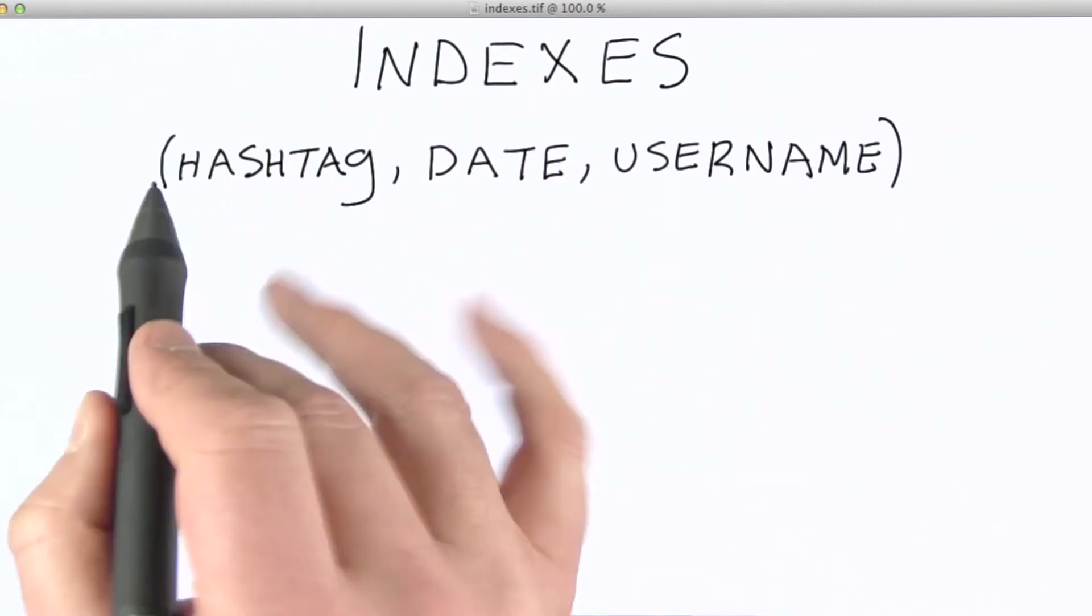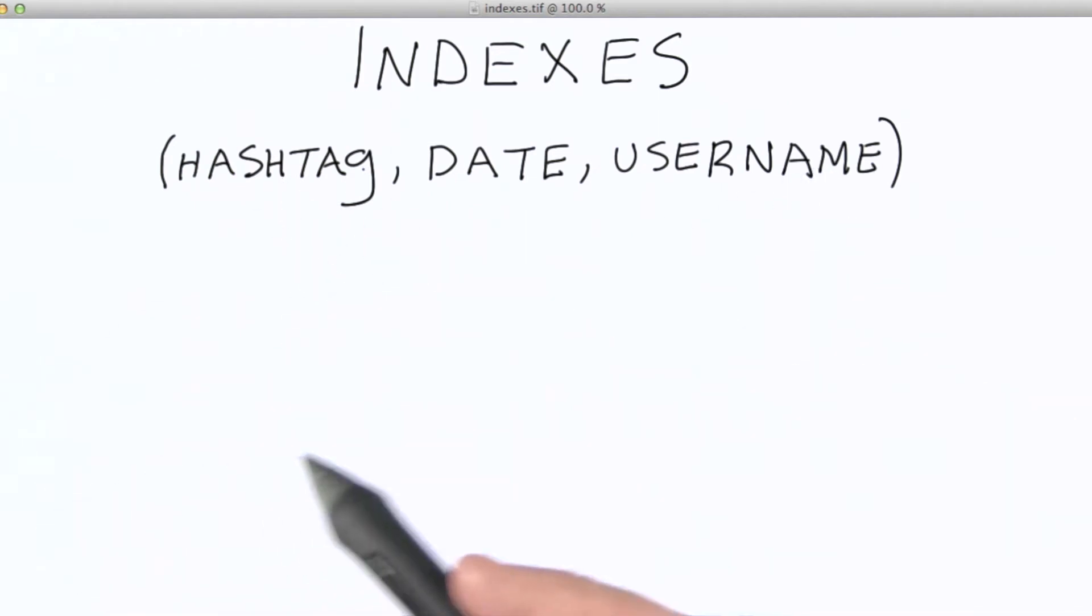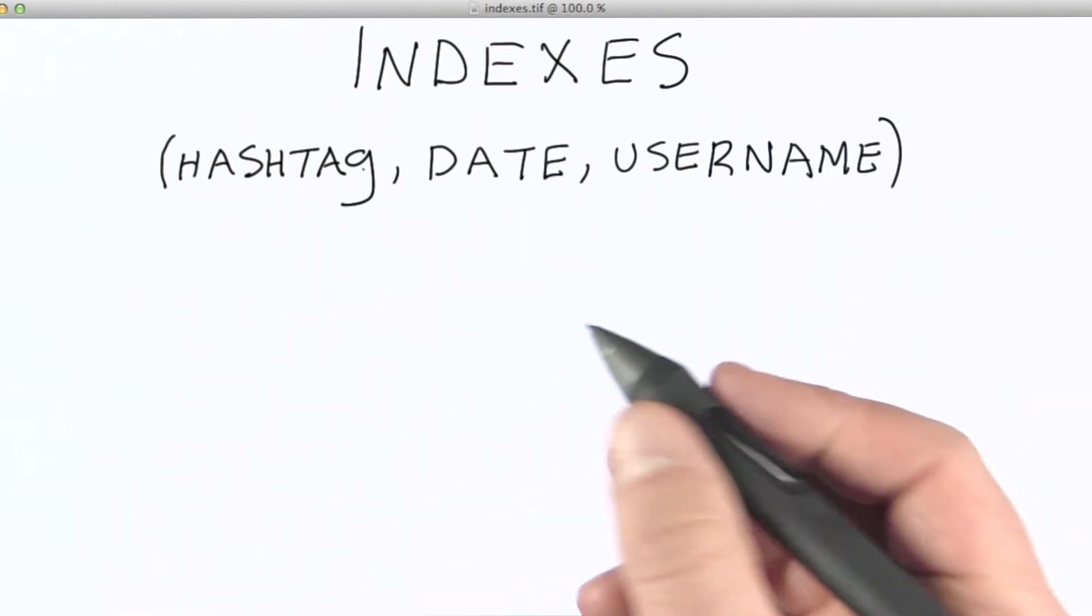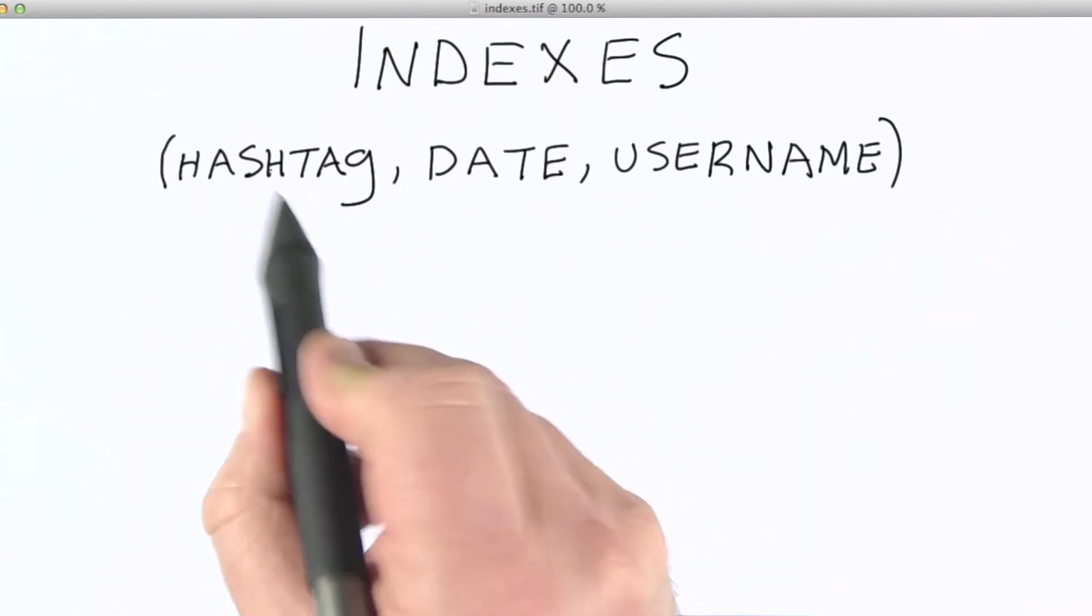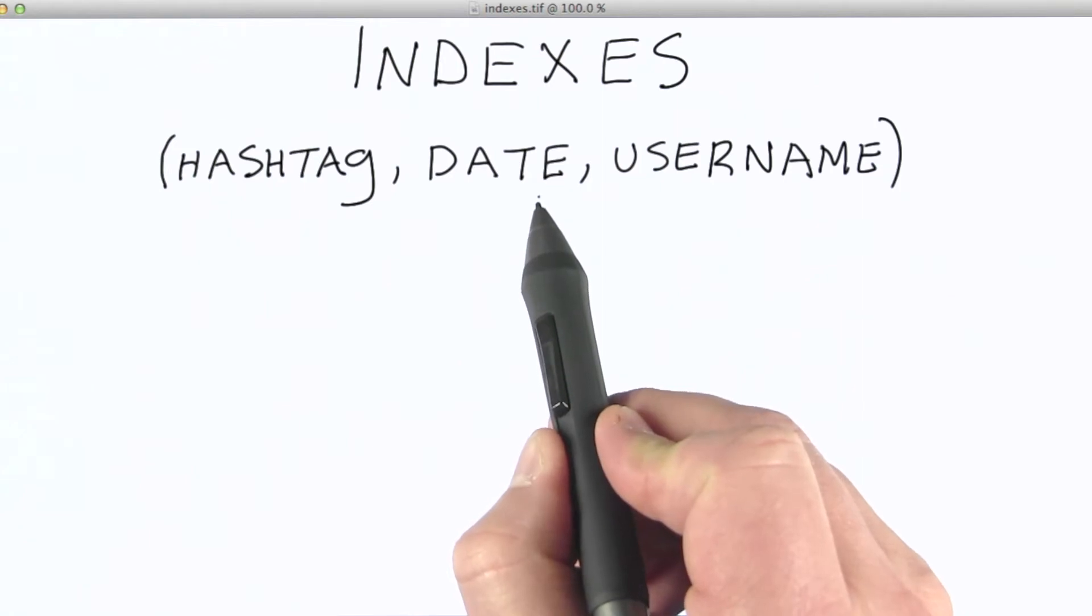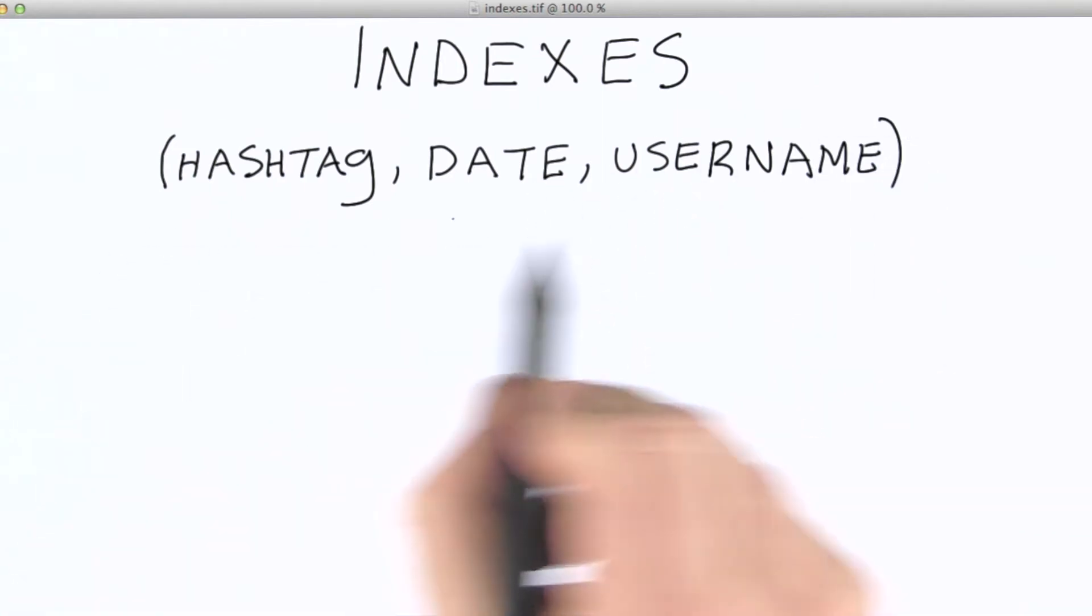In MongoDB, indexes are ordered lists of keys. You can have just one, as we saw in the previous example. Or we could do something like this and construct an index out of three keys. Let's say, for example, the hashtag, the date on which a tweet was created, and the user name of the person creating the tweet. The order is important here.